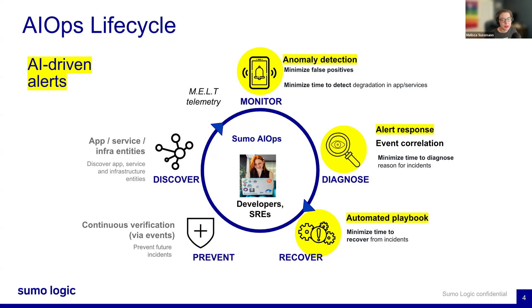The next step is alert response. Once an anomaly is detected, our system generates a detailed alert response that summarizes the alert and provides curated analytics to help you understand the context and root cause analysis. The automation playbooks speed up incident resolution time using predefined workflows that diagnose and remediate issues automatically, reducing the time it takes to resolve any incident.